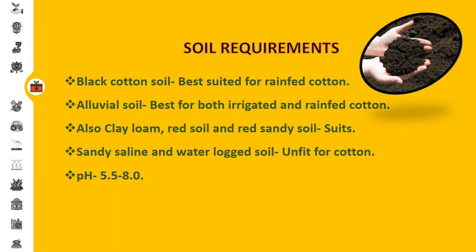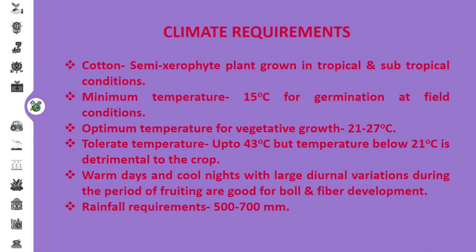In case of soil requirement, cotton prefers black cotton soil, which is best for rain-fed cotton. Alluvial soil is also best for both irrigated and rain-fed cotton. Clay loam, red, and red sandy soils are also suitable for cotton cultivation. However, sandy, saline, and waterlogged soils are unsuitable for cotton cultivation. The pH requirement for cotton cultivation is 5.5 to 8.0.